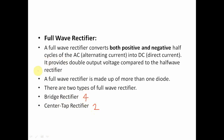Full wave rectifier converts both positive as well as negative half cycles. Half wave rectifier only conducts for the positive half cycle — it does not conduct for the negative half cycle. But a full wave rectifier conducts both positive as well as negative half cycles. Basically, a rectifier is used for conversion of AC into DC, where DC is nothing but pulsating DC. It provides double output voltage compared to the half wave rectifier.